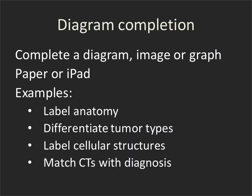The next exercise can be done as individuals or as groups. You can have them complete a diagram, complete an image, annotate a graph, or evaluate an image. These can be done easily on an iPad or on paper depending on what type of thing you're doing. Some examples: labeling anatomy, differentiating between different tumors, labeling cellular structures, matching a CT with a diagnosis. Some of these work better electronically than on paper. I would make a PDF of the data you want to show and send that out in advance.